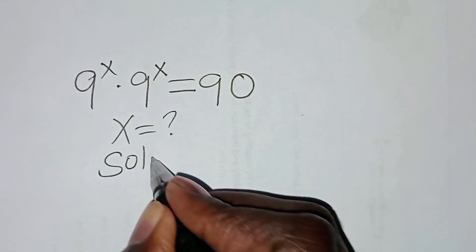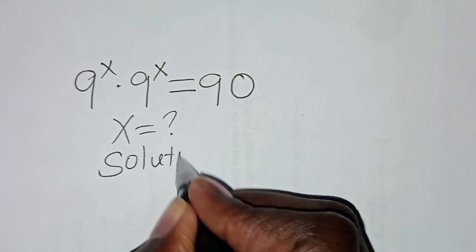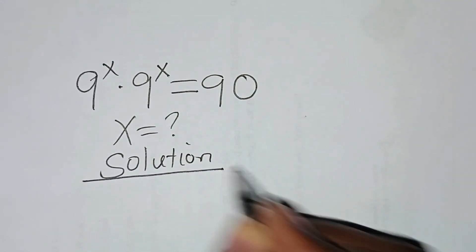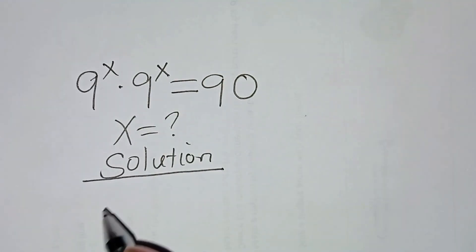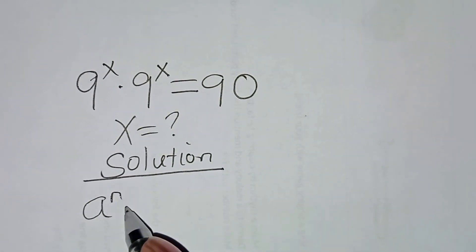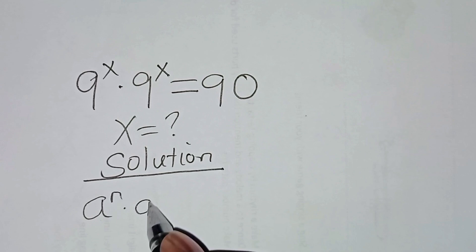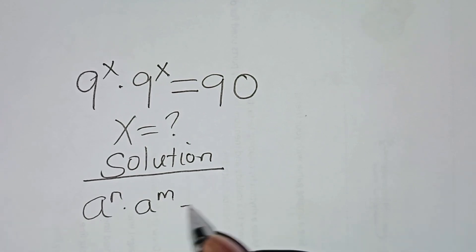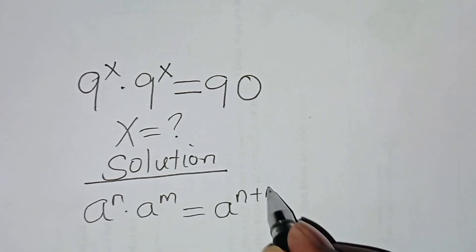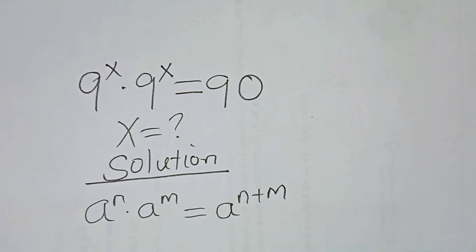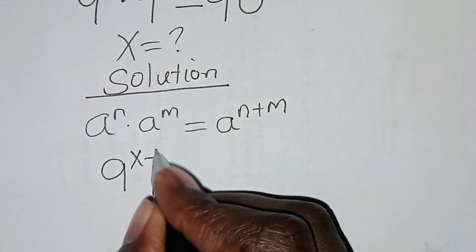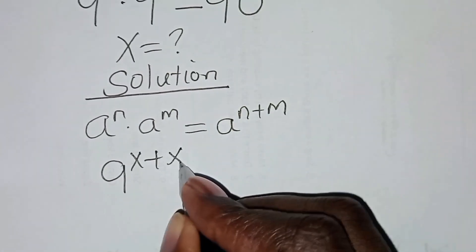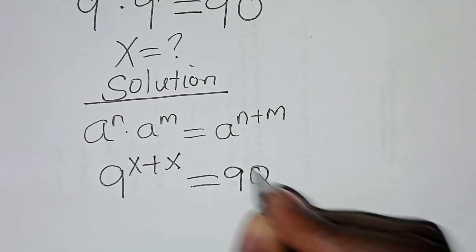Now, the solution from here. We have that 9 to the power x times 9 to the power x. This is in the form of a to the power n times a to the power m, which we can express as a to the power n plus m. So now here we'll have 9 to the power x plus x, and this is equal to 90.